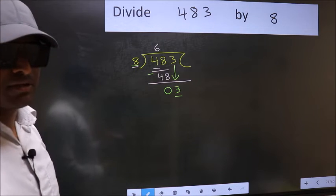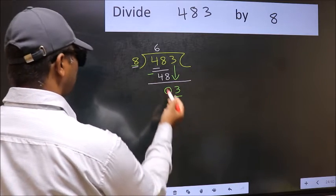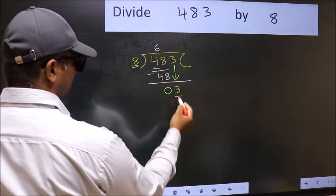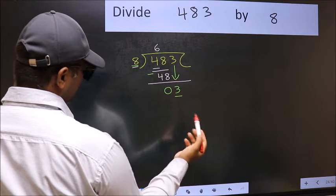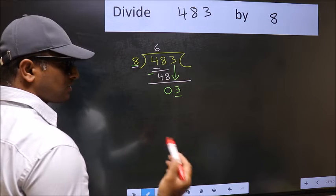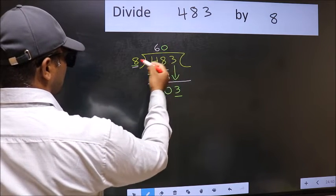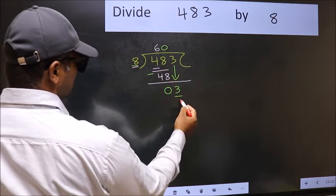Instead, what you should think of doing is which number should we take here. If I take 1, we will get 8. But 8 is larger than 3. So what we should do is we should take 0. So 8 into 0, 0.